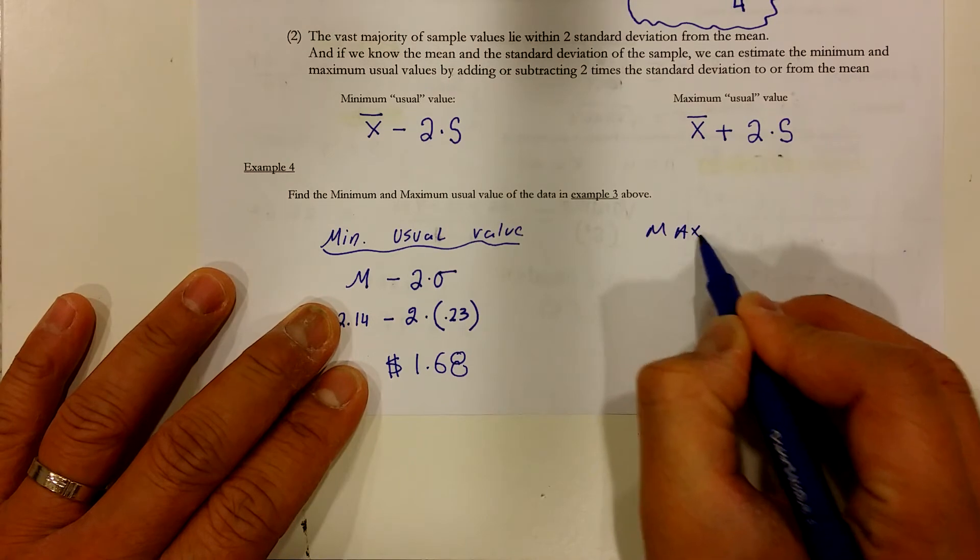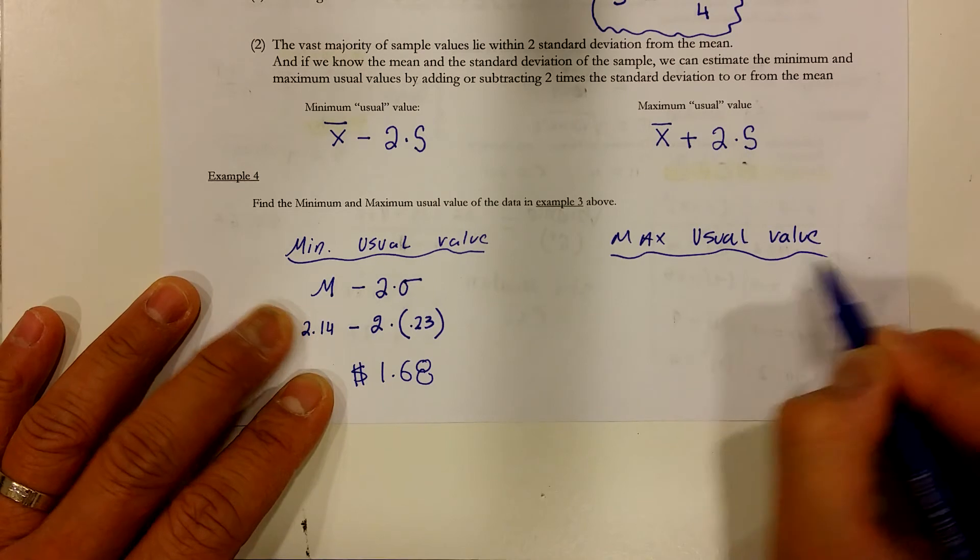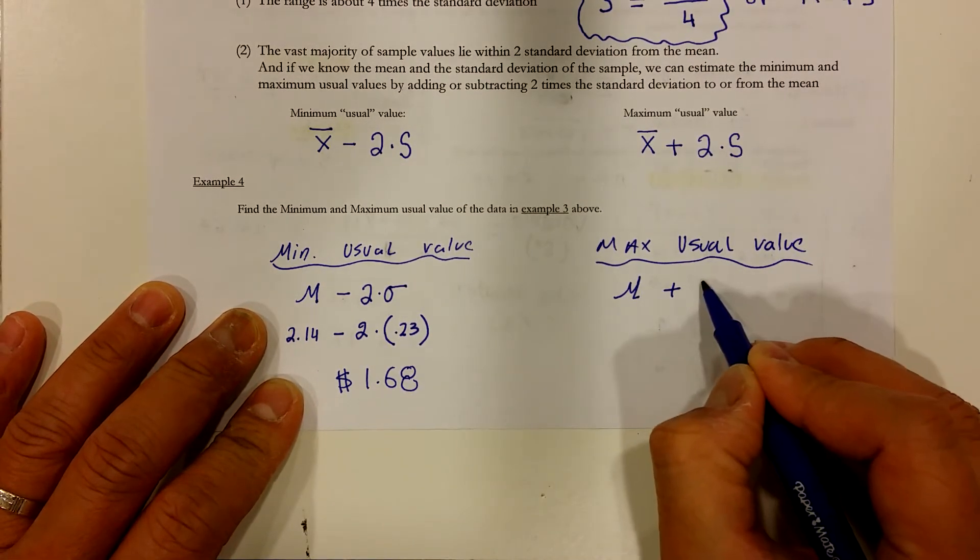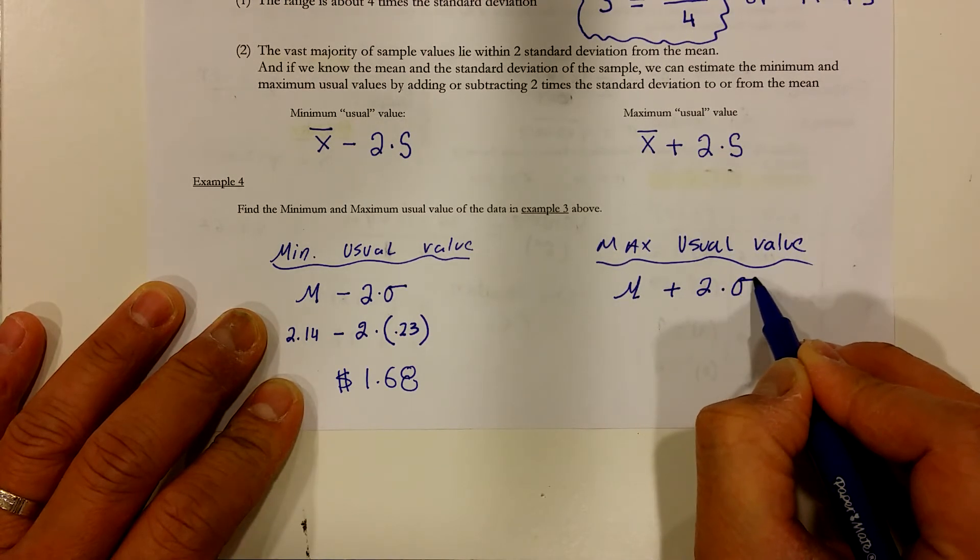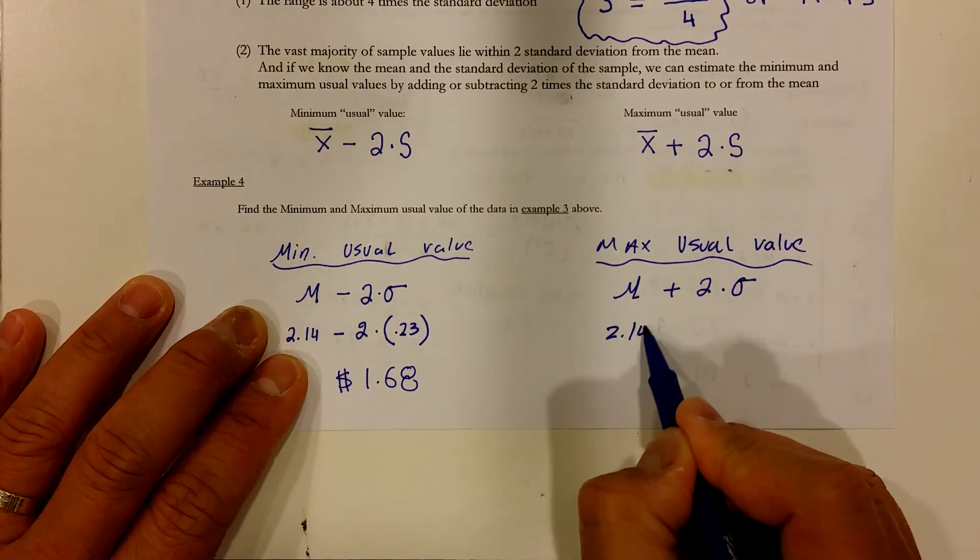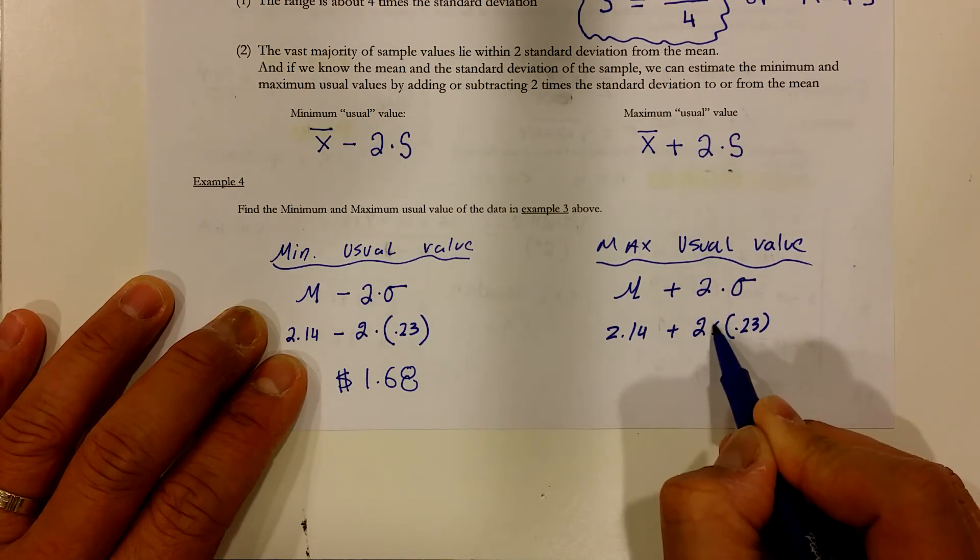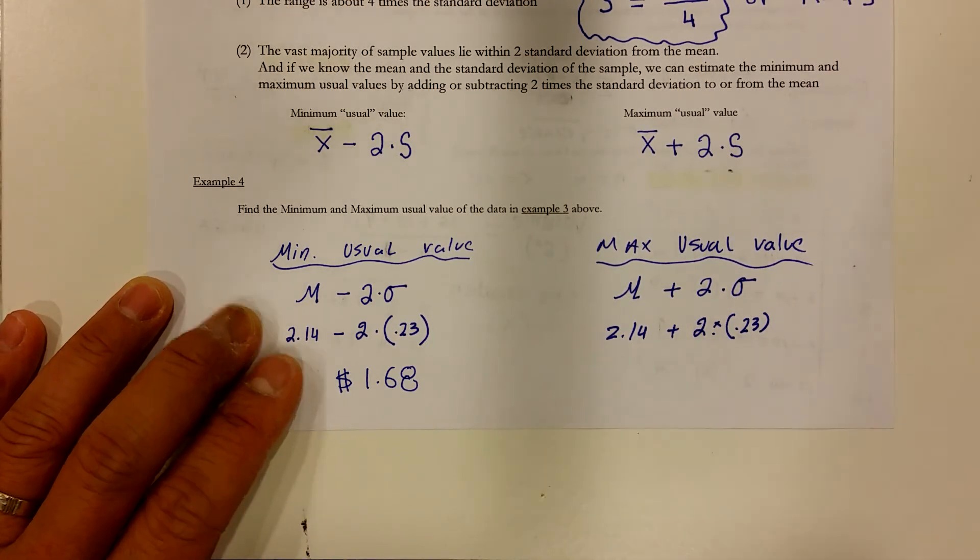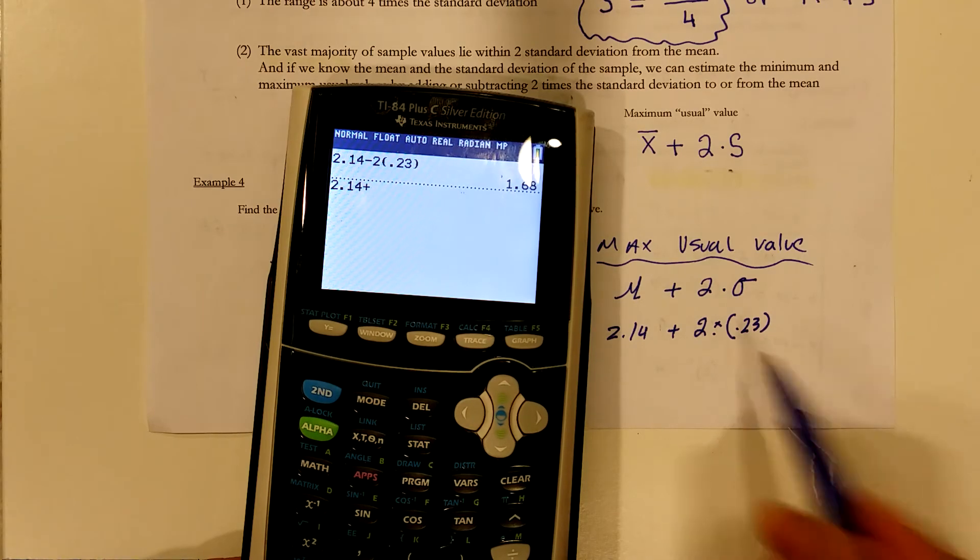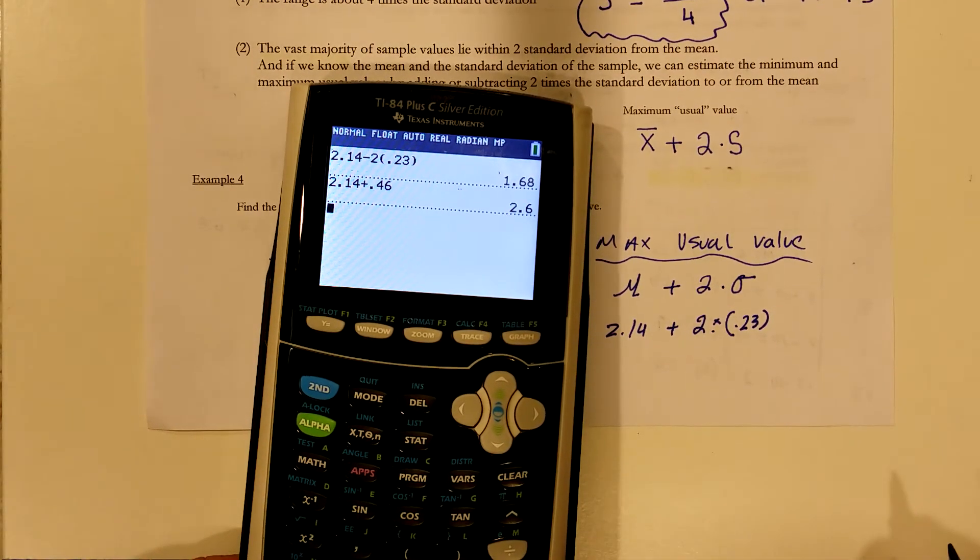The maximum usual value can be found by taking the average plus 2 times the population standard deviation. So, $2.14 plus 2 times 0.23. Let's plug that in and see what we get. $2.14 plus 2 times 0.23 is 0.46. So, 0.46 and that comes out to be $2.60.